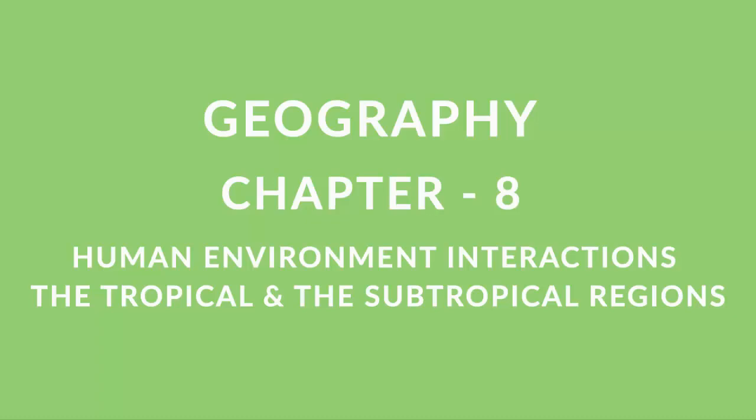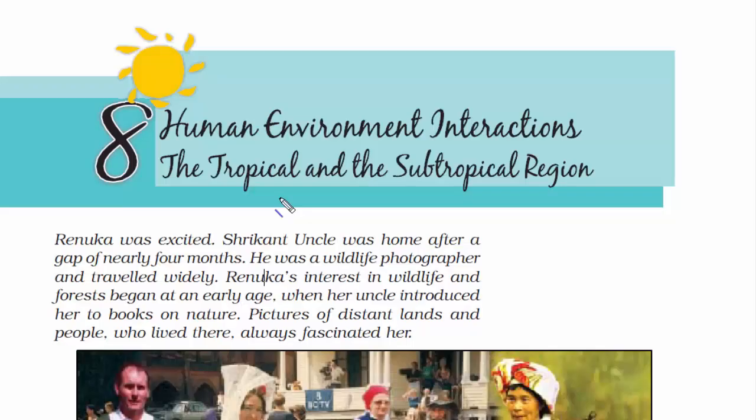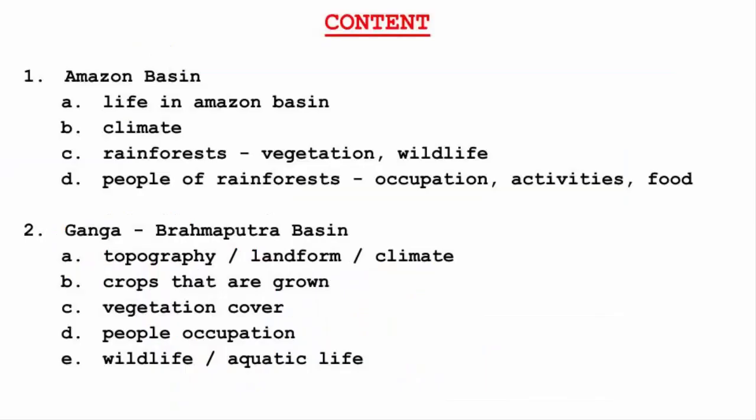Welcome to the 8th chapter of Class 7 Geography. Chapter 8: Human Environment Interactions — the Tropical and the Subtropical Region. Here is a brief overview of what we will be reading in this chapter. The two major topics we will be covering are related to the Amazon and the Ganga Brahmaputra Basin. So with no further ado, let's begin.